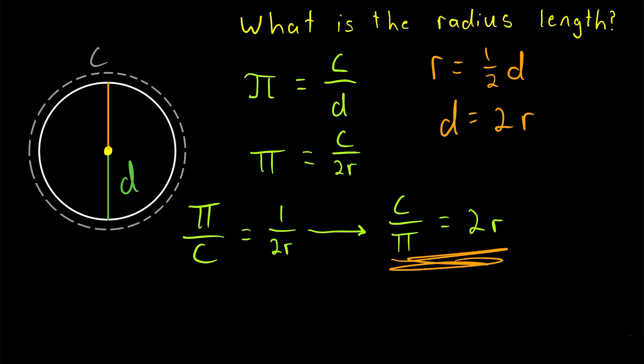Then, just divide by 2 and we're done. Dividing both sides of this equation by 2, we get what we're finally looking for. The radius is equal to the circumference divided by 2pi.